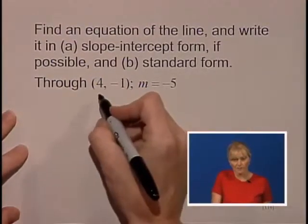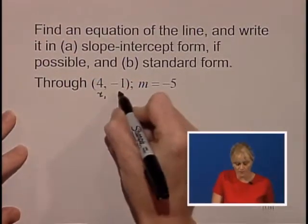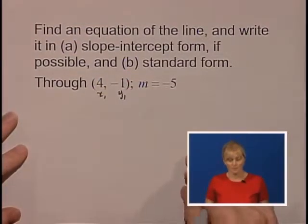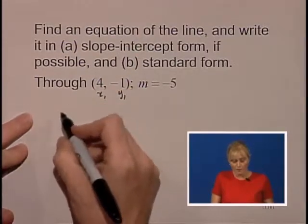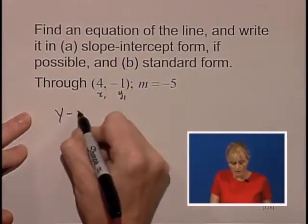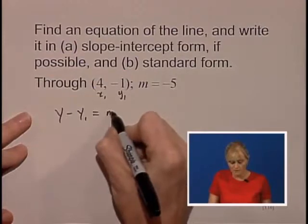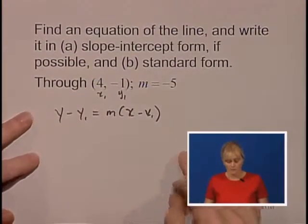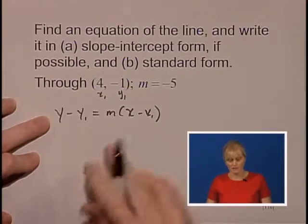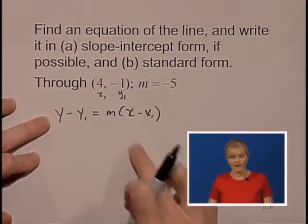We're going to first start and label this point as x1, y1, and we've got our slope at negative 5, so we're going to use the point-slope form. y minus y1 equals m times (x minus x1), making sure we substitute into the correct position the values from our ordered pair and our slope.